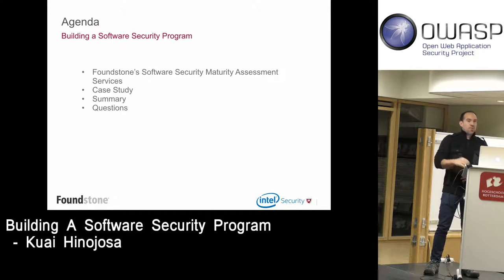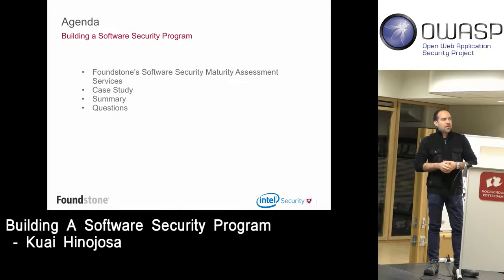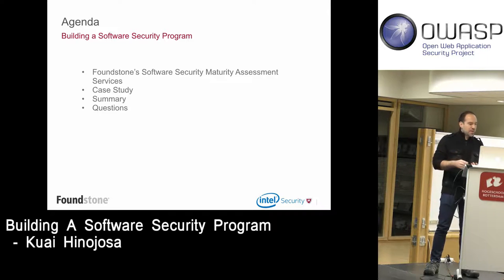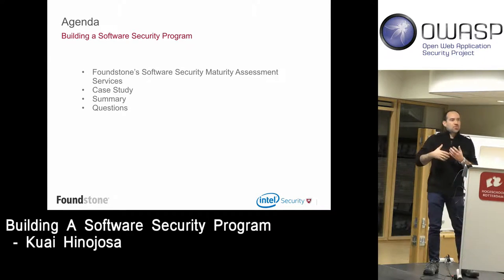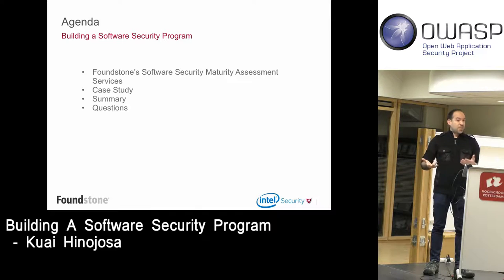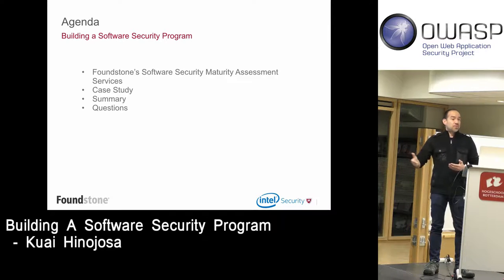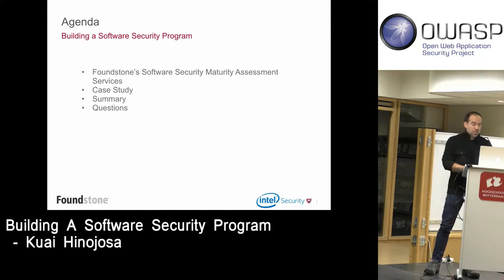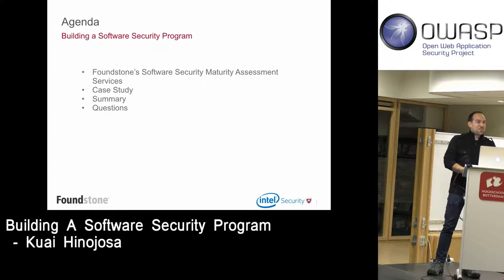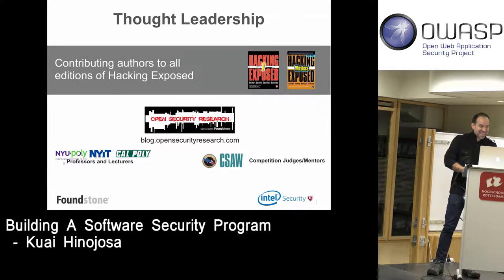I'll talk about the Open Software Assurance Maturity Model, which is a framework to build software security programs. We use our methodologies based on OpenSAM. I'll give a little introduction about the model and in addition I'll provide a case study — examples of how we do assessments to measure a software security program, and how to implement activities to mature an application security program. Please let me know if I'm not speaking loud enough — I do have an accent.